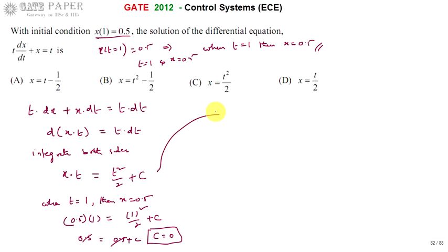From this equation, we can write xt = t²/2, and t cancels, which gives x = t/2. So the solution of this differential equation is x = t/2. The right answer is D. Thank you.